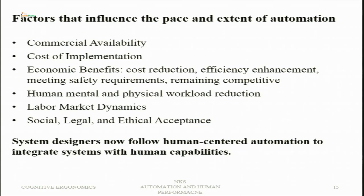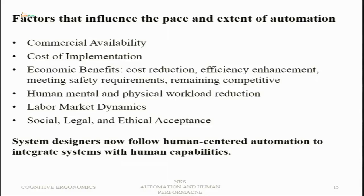Several factors influence the pace and extent of automation. Commercial availability means more people will use and acquire automation, leading to wider spread and greater extent. Cost of implementation also influences pace — if the cost is low it is more likely to be implemented and accepted. Economic benefits include cost reduction, efficiency enhancement, meeting safety requirements, and remaining competitive in the business domain.